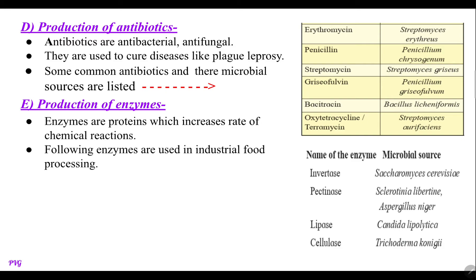These antibiotics are used to cure diseases like plague and leprosy. Some common antibiotics are given in tabulated form. For example, erythromycin — its source is Streptomyces erythreus; penicillin — its source is Penicillium chrysogenum; streptomycin — its source is Streptomyces griseus. Further examples include bacitracin from Bacillus and terramycin from Streptomyces aureofaciens.